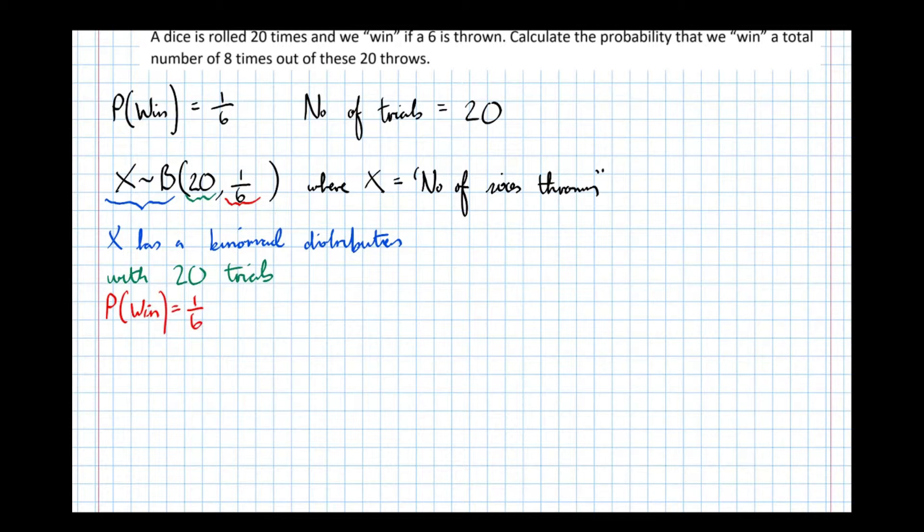Probability of a win equals 1 sixth. So when given that x squiggle b notation, that's what it means. x has a binomial distribution, 20 trials, probability of winning is a sixth. And I've had to define what x is. x is the number of wins, the number of sixes thrown. So that there is the binomial model defined.